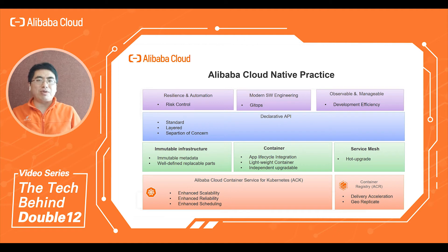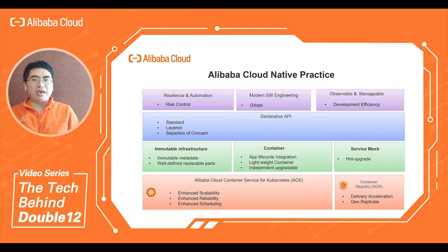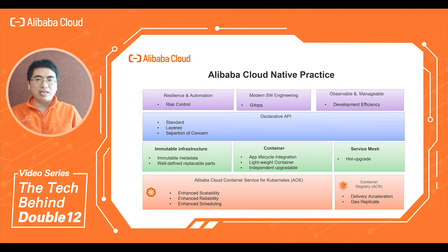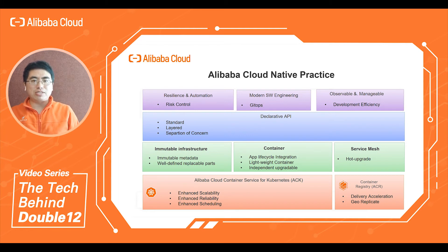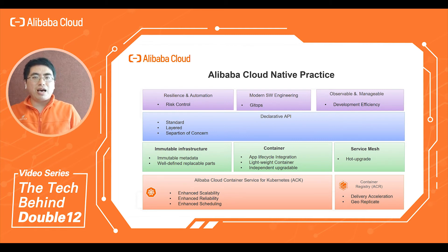All these cloud-native practices are implemented upon Alibaba Container Service and Container Registry, just as our customers in public Alibaba Cloud. Alibaba Container Service has been enhanced in scalability, reliability, and schedulability. Alibaba Container Registry can geo-replicate many app assets such as container images, and can greatly accelerate the delivery of app assets. Alibaba Container Service and Container Registry are perfect for large-scale cloud-native practice.